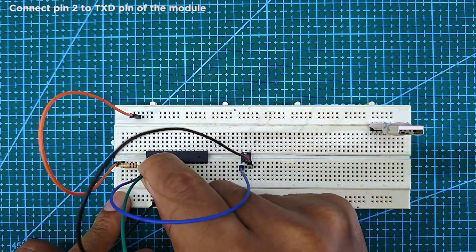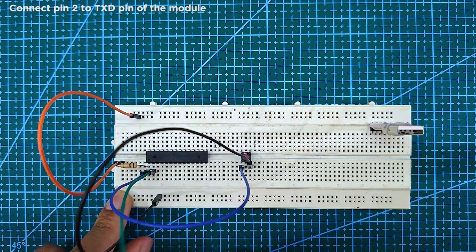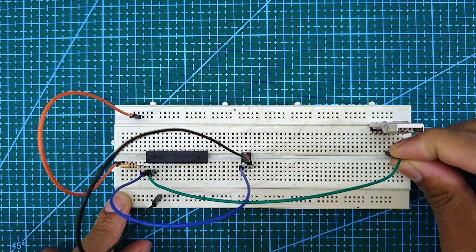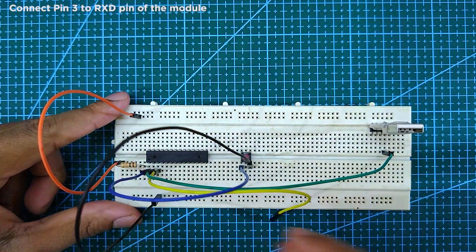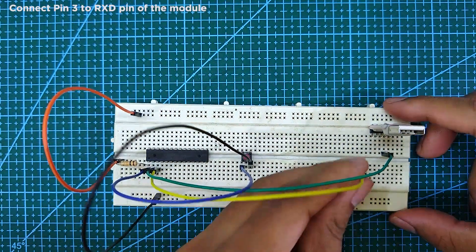Next, connect pin 2 to the TXD pin of the USB to TTL module, and connect pin 3 to the RXD pin of the USB to TTL module.